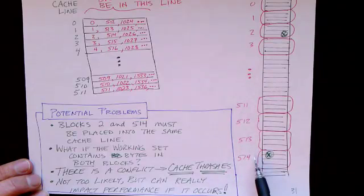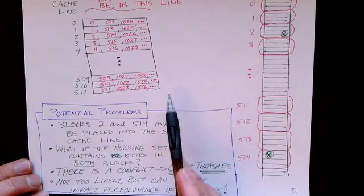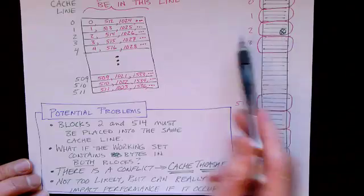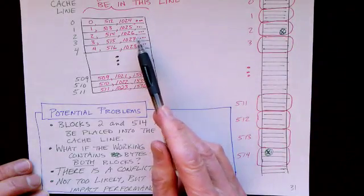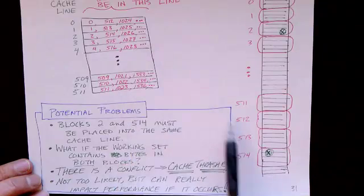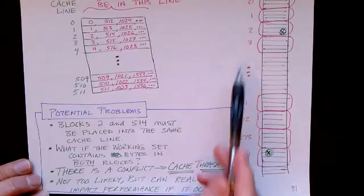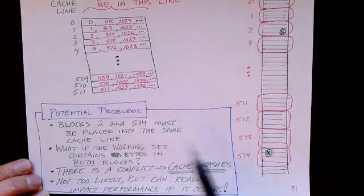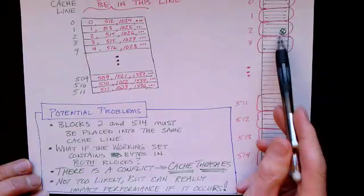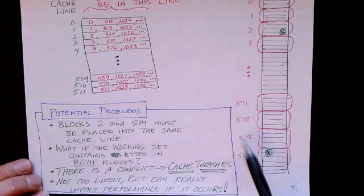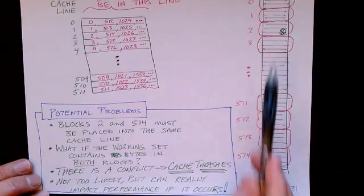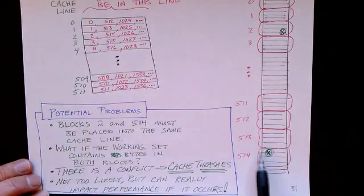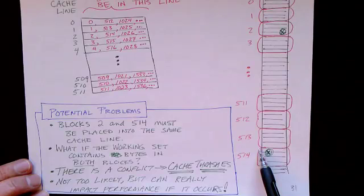We can only get one of these blocks into the cache. So if our program is executing and it wants to use this byte, then it will load this block into the cache. And then very soon thereafter, it might need this byte. So it evicts block 2 and moves block 514 into the same spot. And then it accesses this. And then perhaps it needs to go back and access this byte again. It'll have to evict 514 and move block 2 back into the cache.